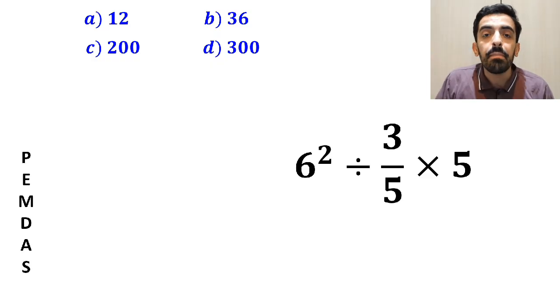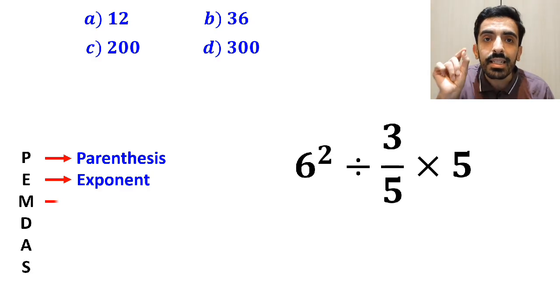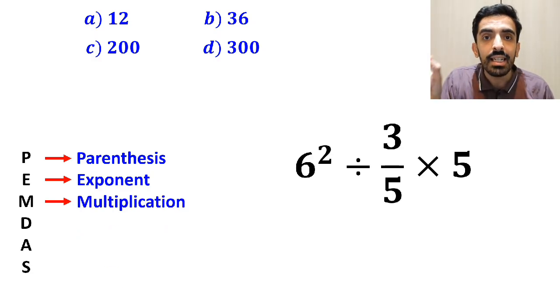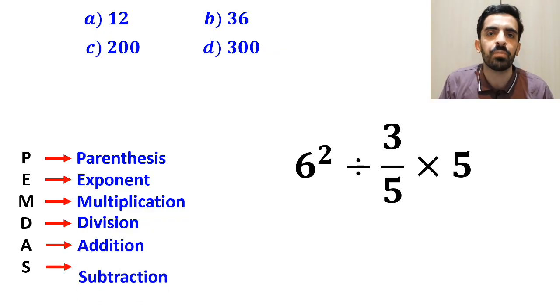In this rule, P stands for parentheses, E stands for exponent, M stands for multiplication, D stands for division, A stands for addition, and S stands for subtraction.